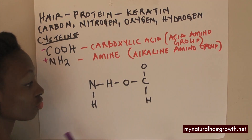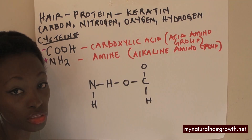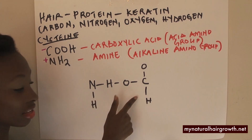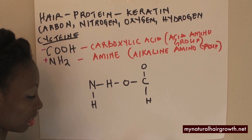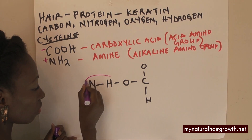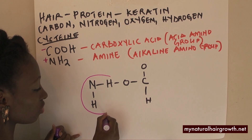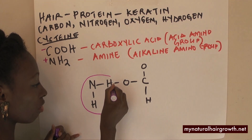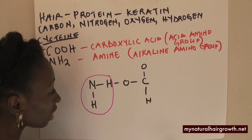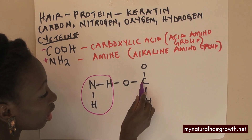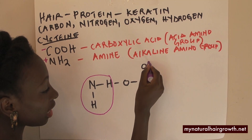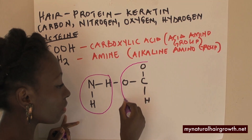If I was to draw circles around this, you would see these two elements. The first one is the nitrogen and carbon with the two oxygen and the two hydrogen molecules — and there you have it. The second one is carbon with the two oxygen and a hydrogen molecule.